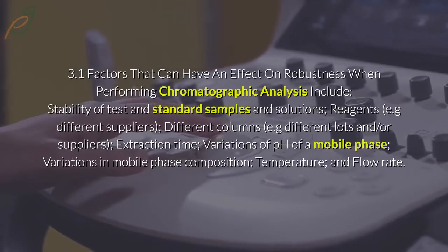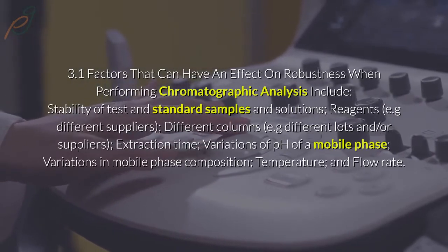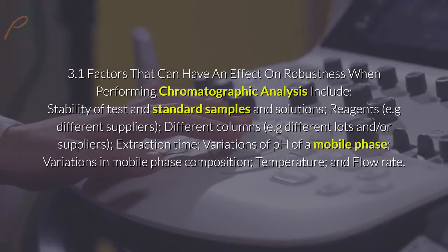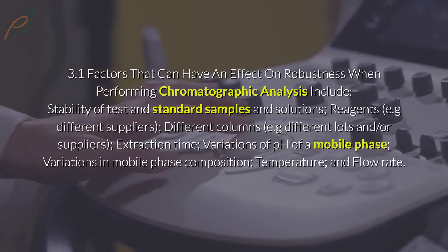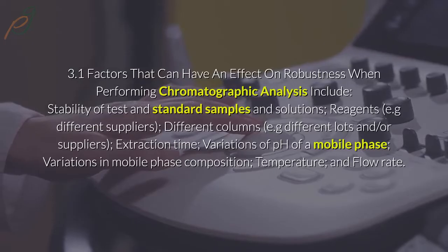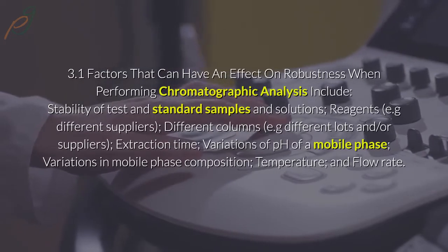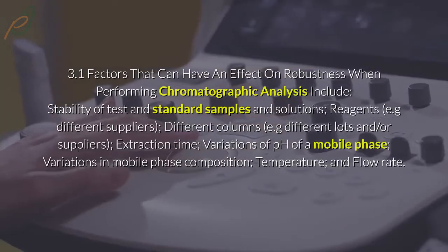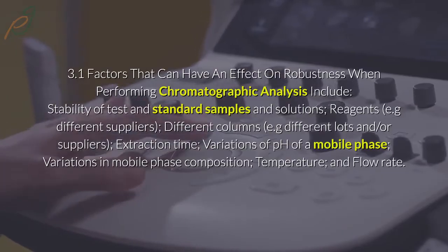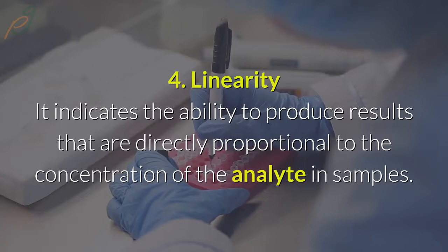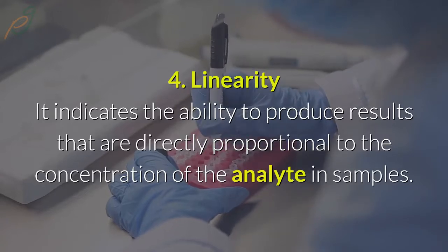3.1 Factors that can have an effect on robustness when performing chromatographic analysis include: stability of test and standard samples and solutions, reagents (e.g., different suppliers), different columns (e.g., different lots and/or suppliers), extraction time, variations of pH of a mobile phase, composition, temperature, and flow rate.